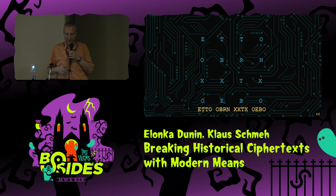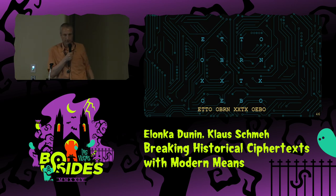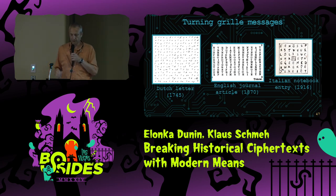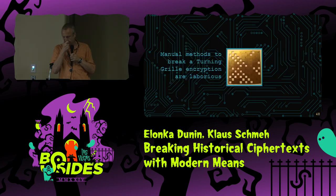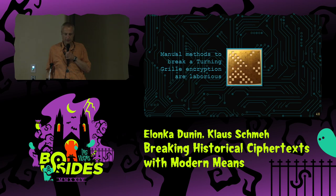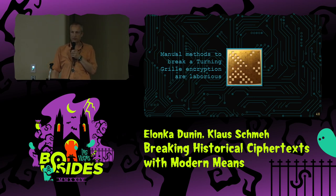Here you can see the ciphertext. This kind of encryption was quite popular, especially in the 19th century. Here are a few examples from the Netherlands, England, and Italy. Can an encryption of this kind be broken? The answer is yes — there are manual methods that were already possible in the 19th century, but it's very laborious. Can we use a computer-based method? Yes, we can use hill climbing again.